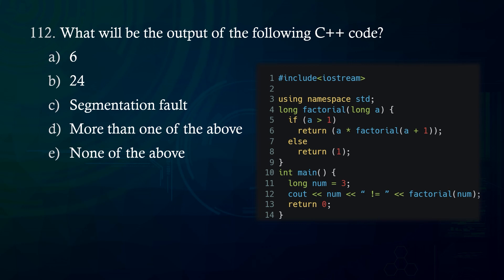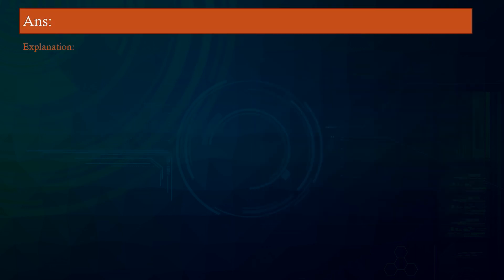What will be the output of the following C code? A. 6. B. 24. C. Segmentation fault. D. More than one of the above. E. None of the above.